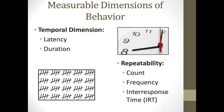Behavior has a temporal dimension — it occurs for some period of time. Another dimension is where in time the behavior occurs. A very common dimension we measure is repeatability: if we observe a client during a certain period, we can count the target behavior as it occurs. For example, with head banging, we could count over 10 minutes, 30 minutes, or an entire day how many instances actually occur.